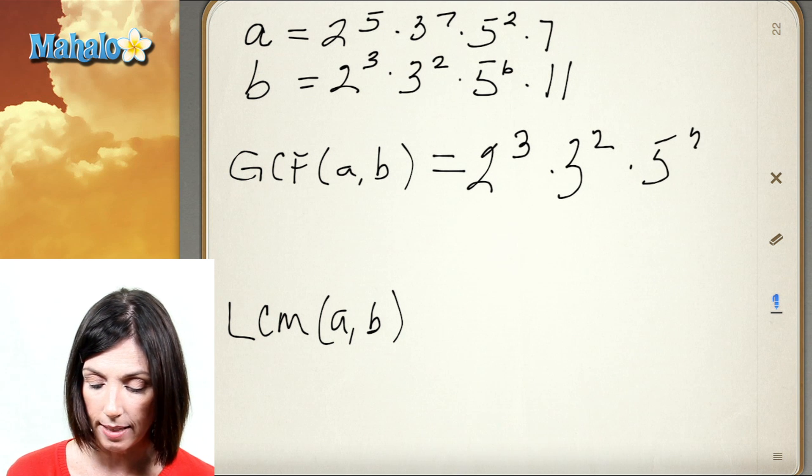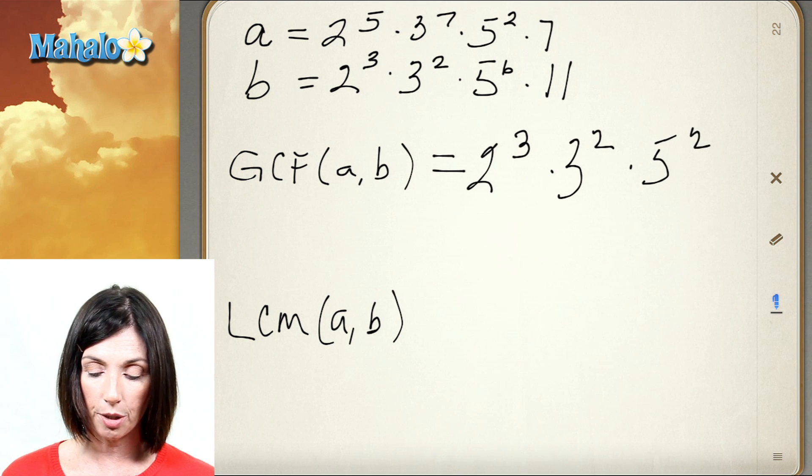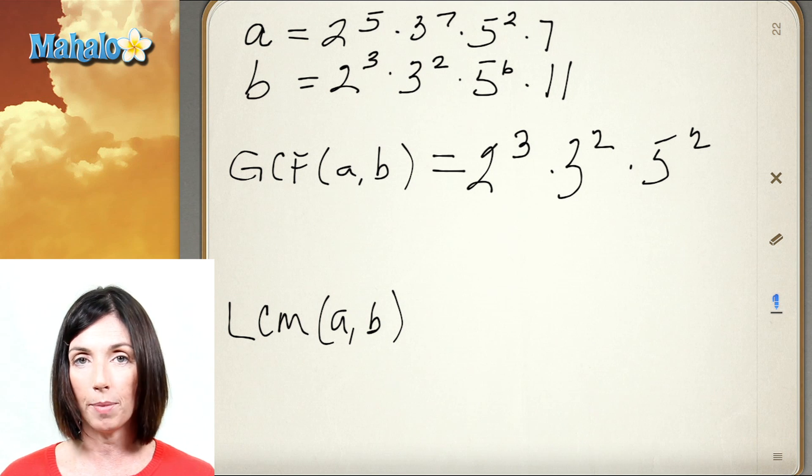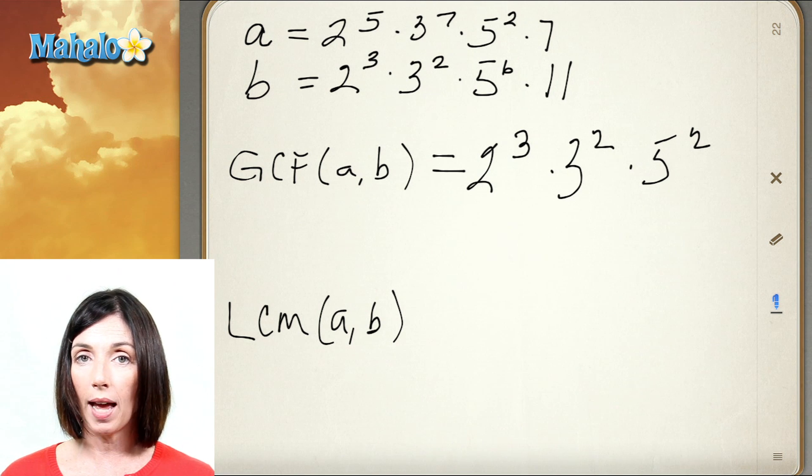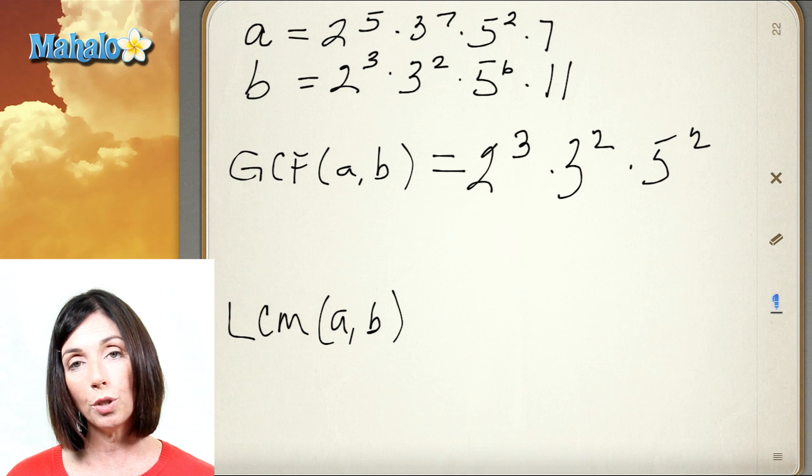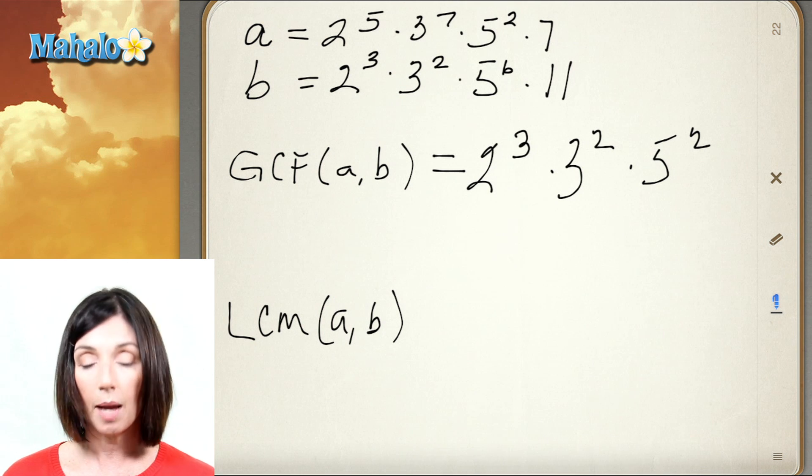Now A has a 7 in its prime factorization, B has an 11, but they don't have anything else in common. So the greatest common factor of A and B will be 2 cubed times 3 squared times 5 squared.